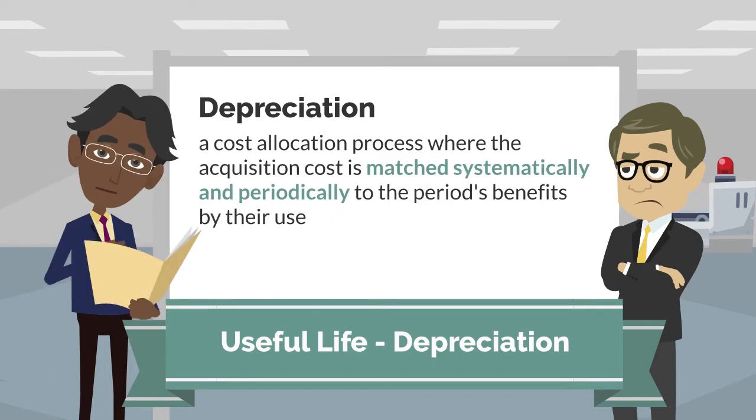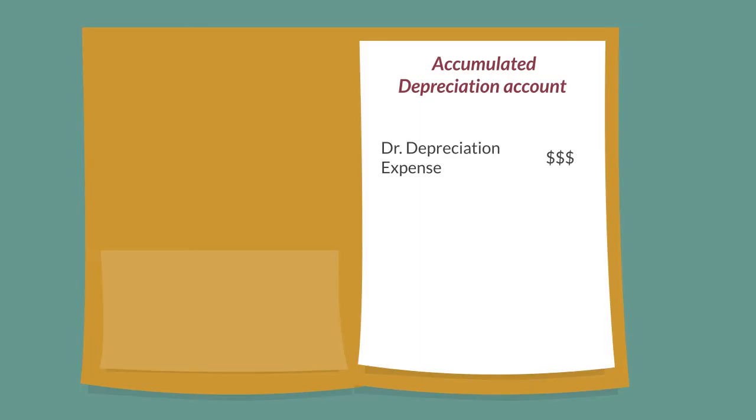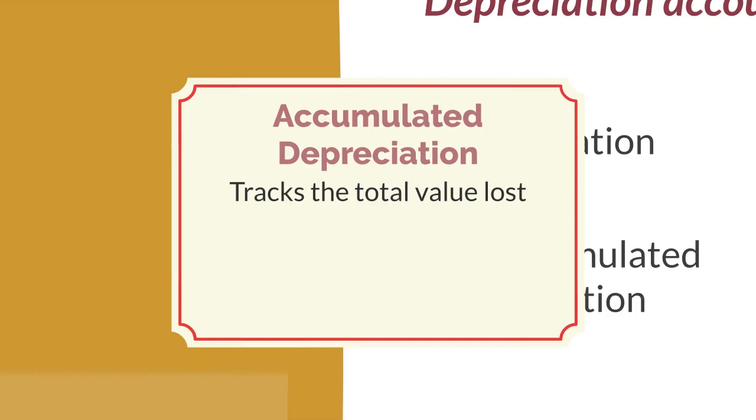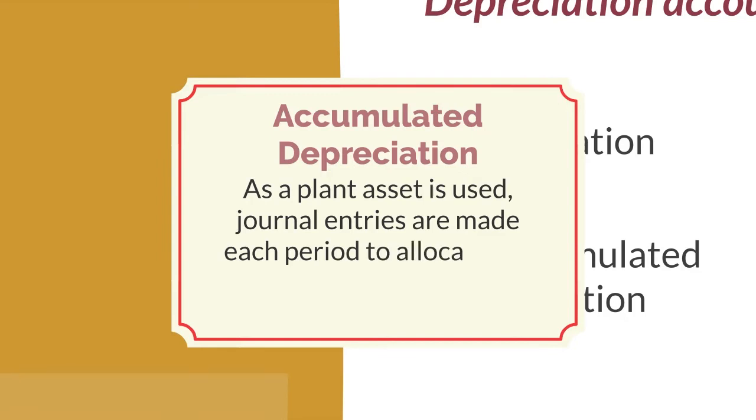This cost is debited as depreciation expense. This is matched with a credit to the asset's accumulated depreciation account, which is a contra-asset account specific to each asset that tracks the total value lost. As a plant asset is used, journal entries are made each period to allocate the dollar amount of depreciation.